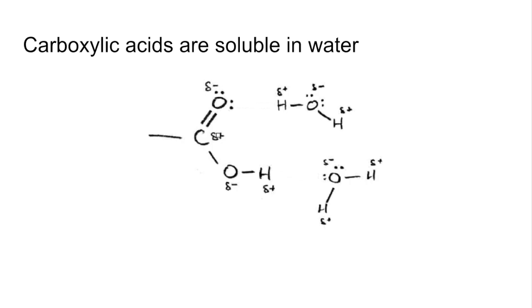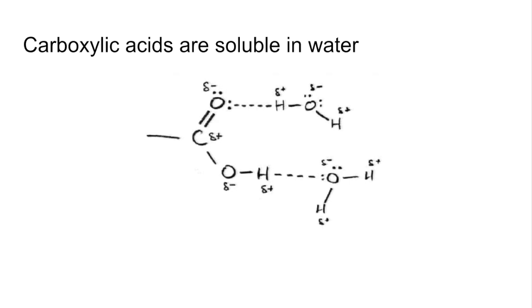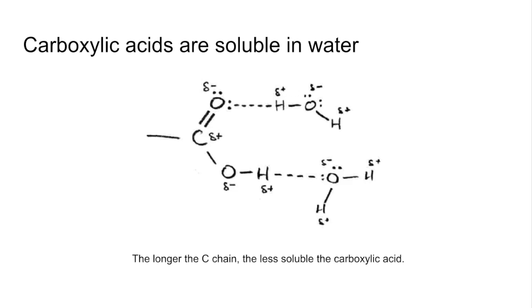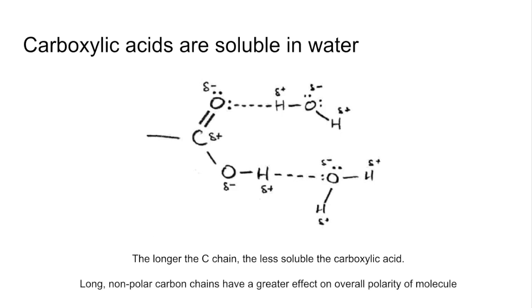Moving on to solubility: carboxylic acids are soluble in water because they can form hydrogen bonds with water molecules. You can see how I've drawn them up there — the hydrogen bond must go from a lone pair on the oxygen to the slightly positive hydrogen of a water molecule. As the carbon chain gets longer, they become less soluble, because the long non-polar carbon chains have a greater effect on the overall polarity of the molecule.